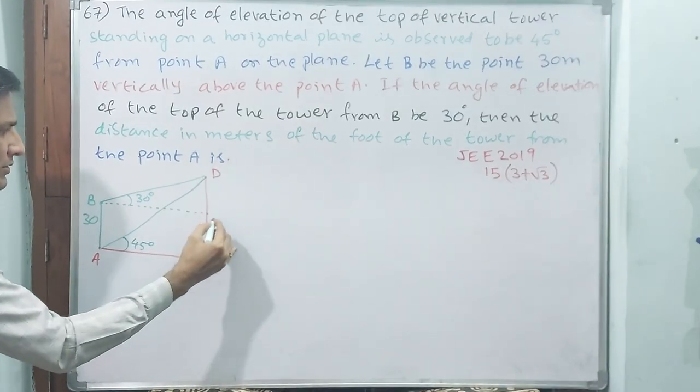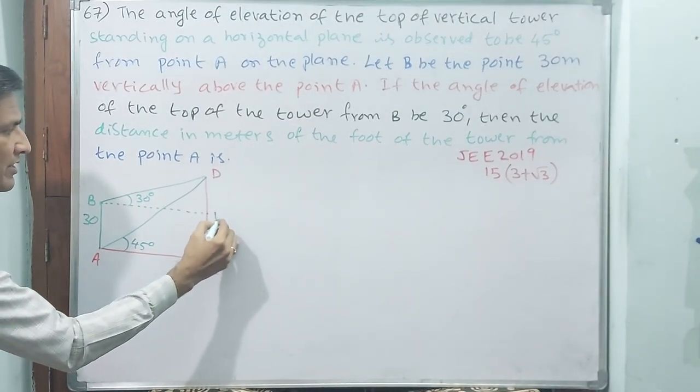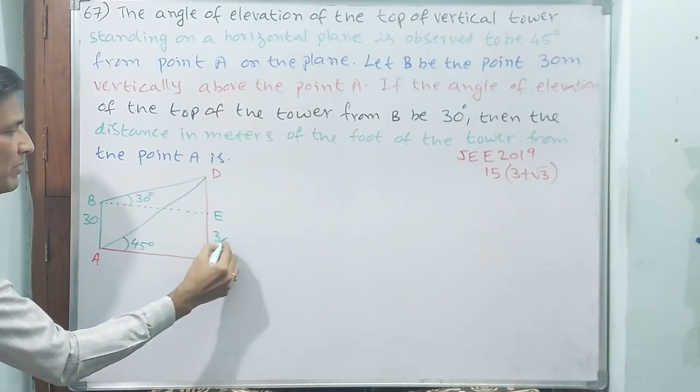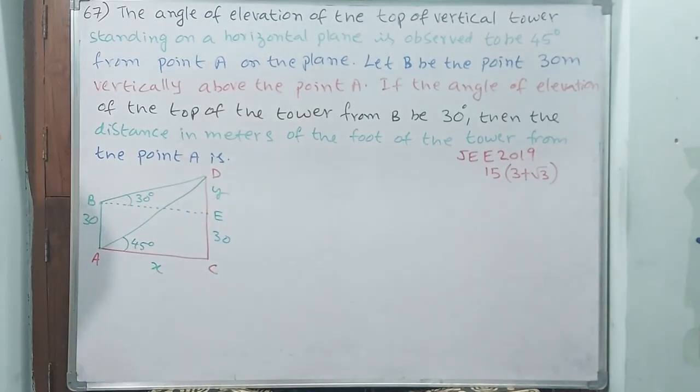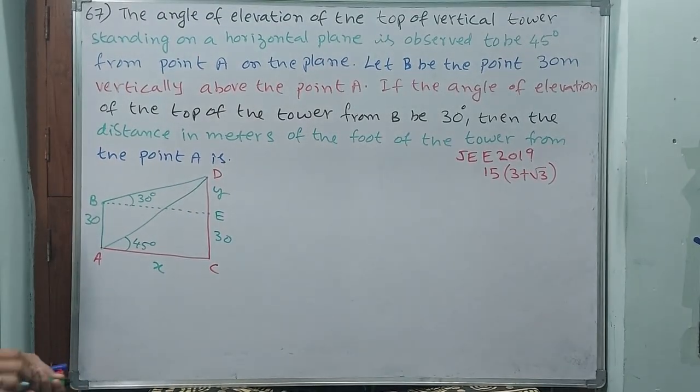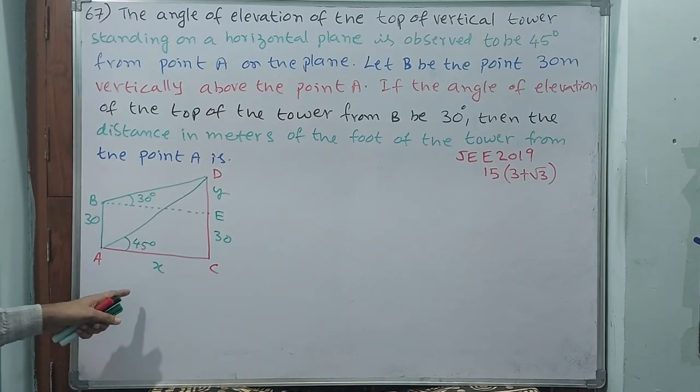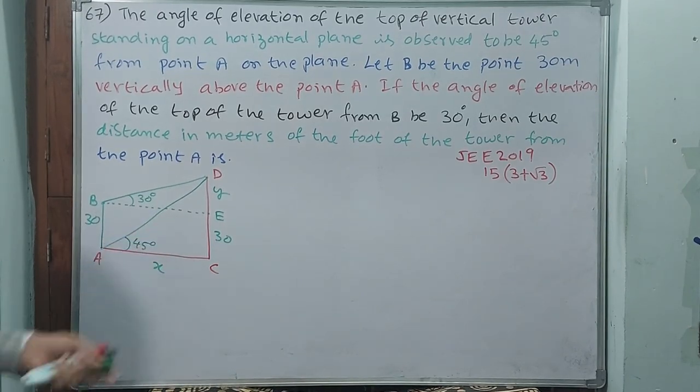That means C, D, E. See, this will be 30, and this I will take as x, and this I will take as y. Understand? They are asking us to find x. This is the data.